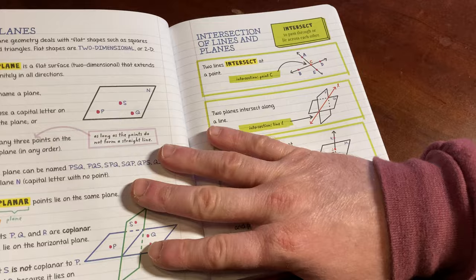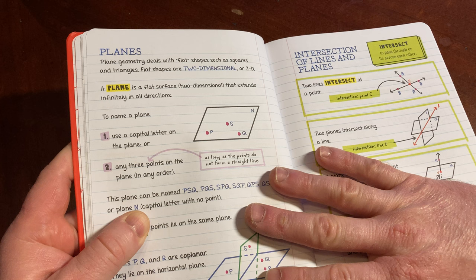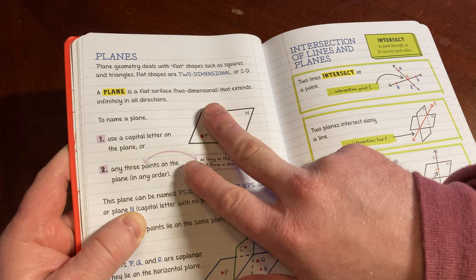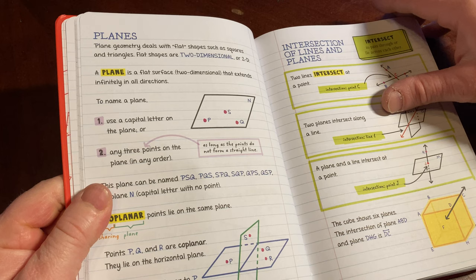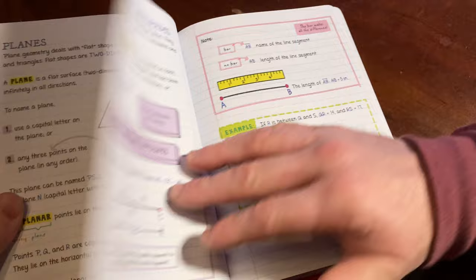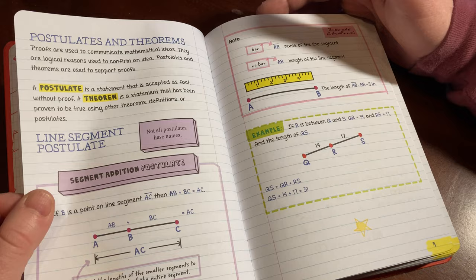Planes. Look at this. You talk about planes. Plane geometry deals with flat shapes such as squares and triangles. Flat shapes are two-dimensional or 2D. A plane is a flat surface, two-dimensional, that extends infinitely in all directions. Cool. If you study Calculus 3, you study equations of planes in space. So that's pretty cool.